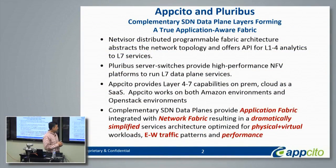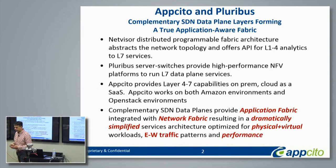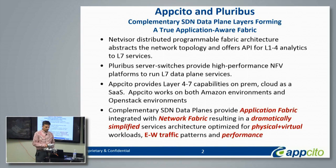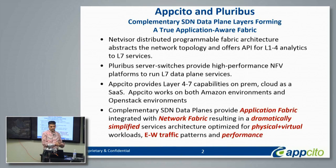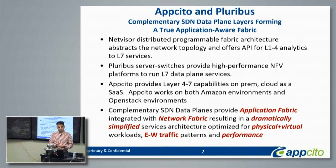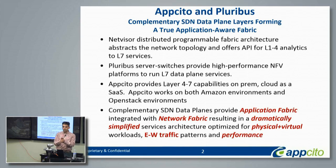The idea here is that you've started to talk about the fabric from a network perspective, which allows you to provide connectivity from an L2 and L3 perspective. The next logical question you need to ask is how do you actually overlay the services on top of that? That's kind of where we come in. Pluribus switches are providing this high-performance capability — a platform which allows you to do network L2 through L4 services.